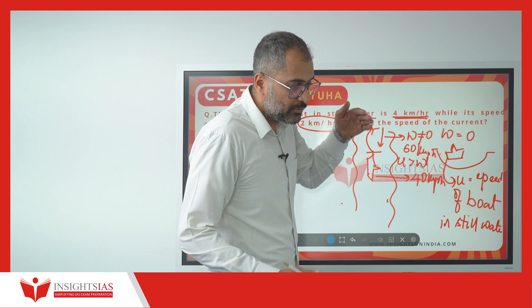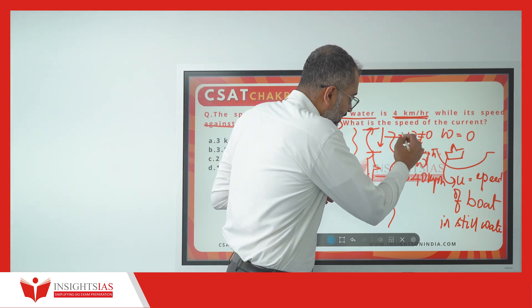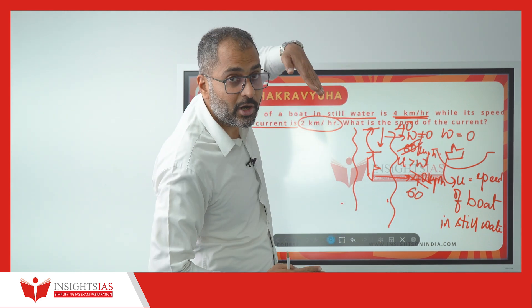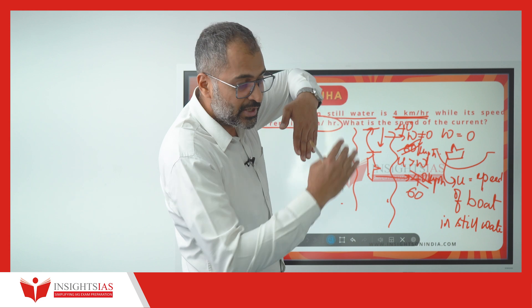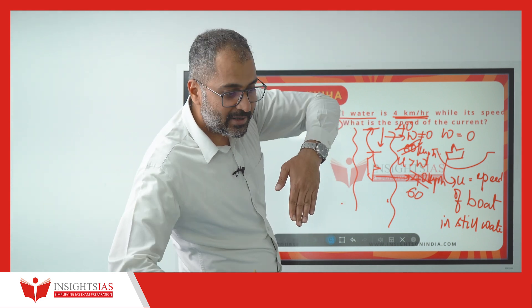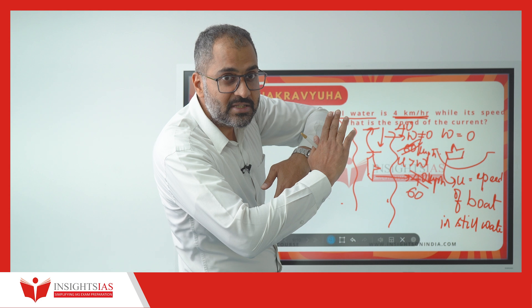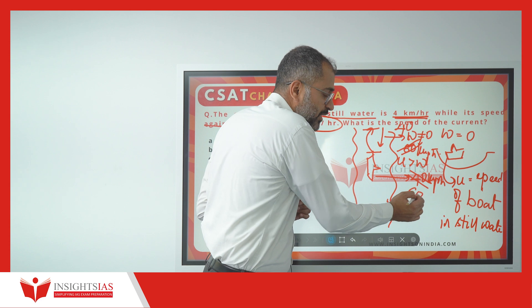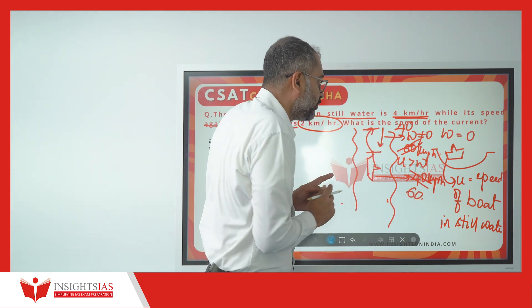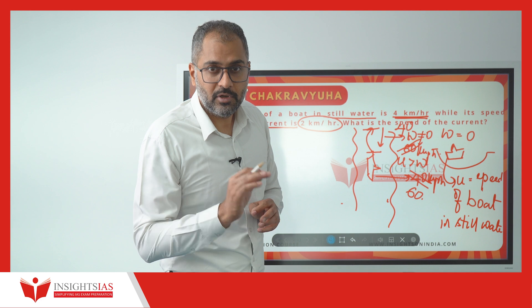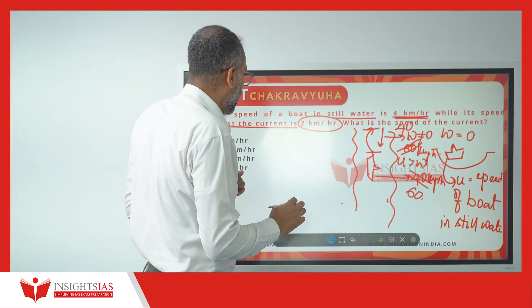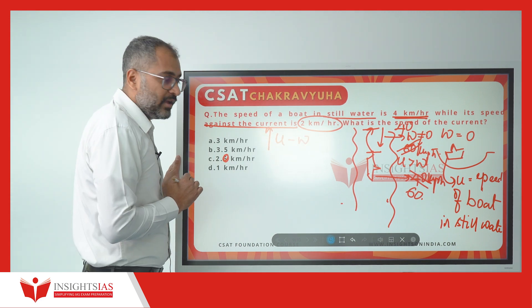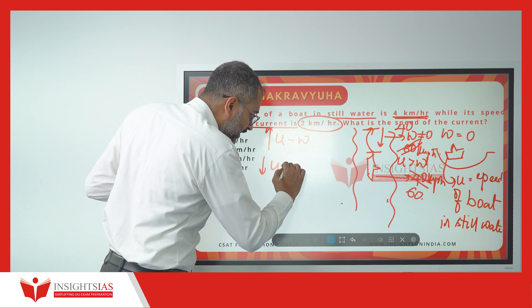While moving up, if the speed of water is 40 km per hour and the speed of the boat is 60 km per hour, the resistance is already 40 km per hour. So the speed will be cut down and the boat can travel upstream at only 20 km per hour — that is, 60 minus 40. So while going up, the speed of the boat and the speed of the water will subtract. While coming down, the speed of the boat and the speed of the water will add up.